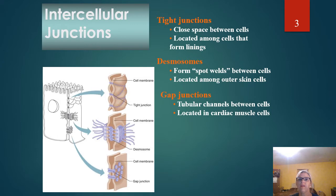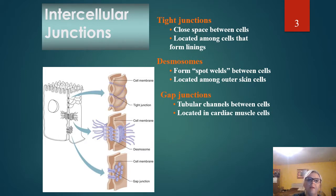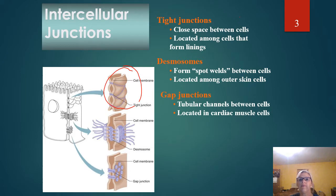We have a tight junction, where membranes of adjacent cells basically fuse together and surround the cells kind of like a belt closed, closing the space between them. You can see tight junctions right here — it just wraps around and cinches up like a tight belt. These also form sheet-like layers in the digestive tract, which is a good example of those.